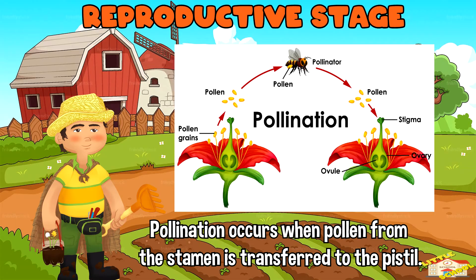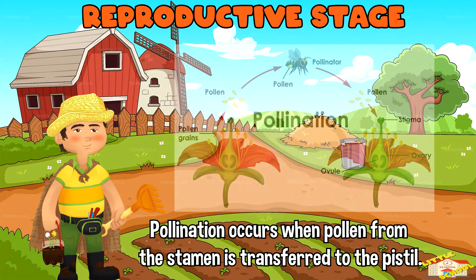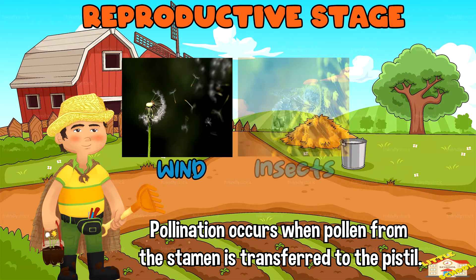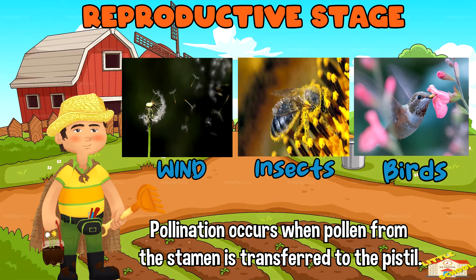Pollination occurs when pollen from the stamen is transferred to the pistil, either by wind, insects, birds, or other animals.